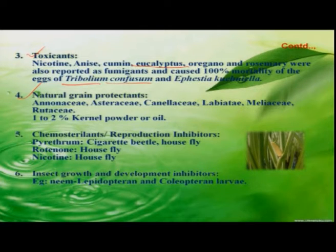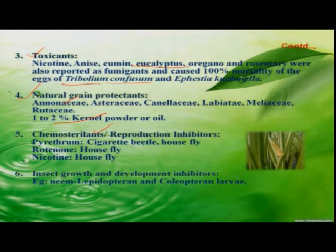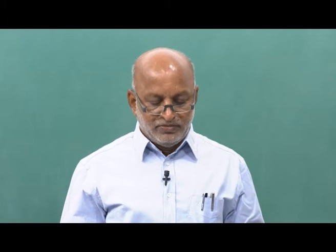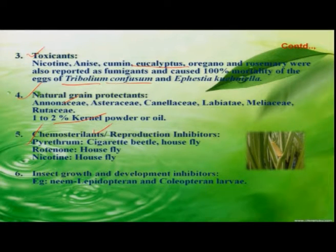Even in India, botanicals are much used in management of stored grain pests. Among them, custard apple — wherein one to two percent kernel powder or oil is mixed — is used in management of stored grain pests. Similarly, some botanicals act as chemosterilants; that is, they inhibit reproduction in insects. Among them, pyrethrum, rotenone, and nicotine are going to inhibit the production of offspring.